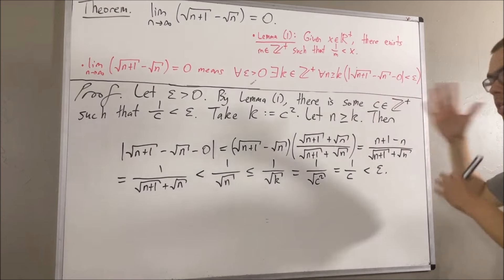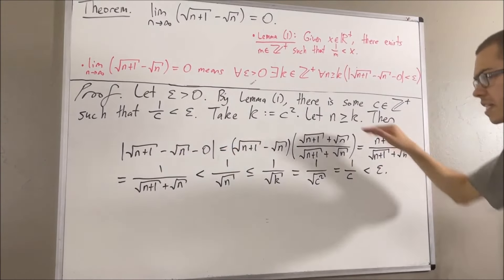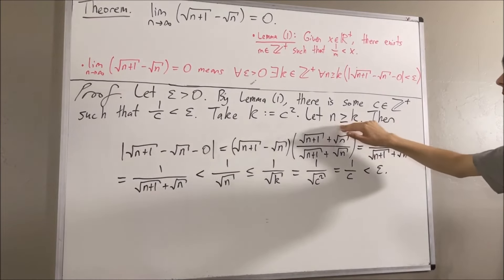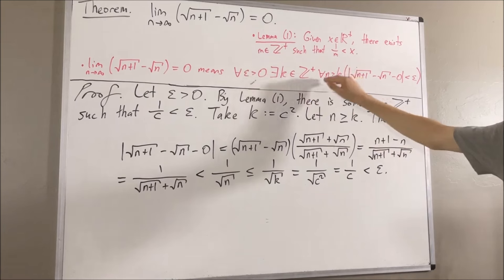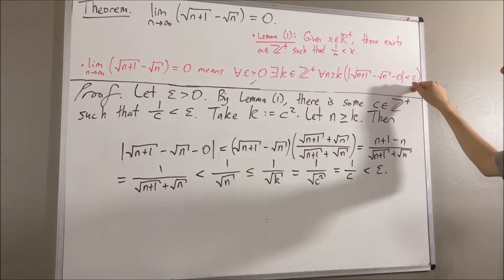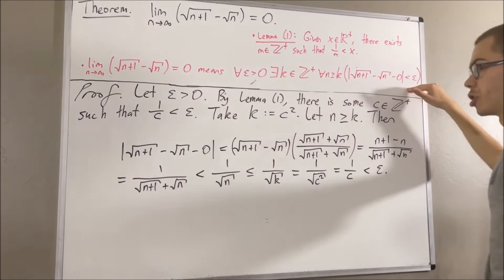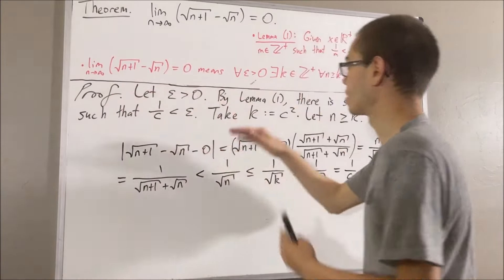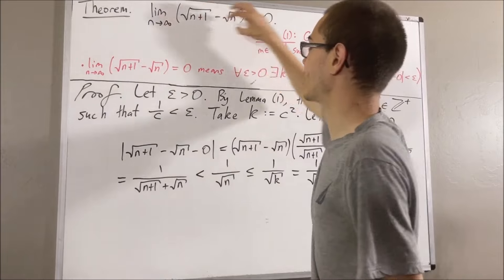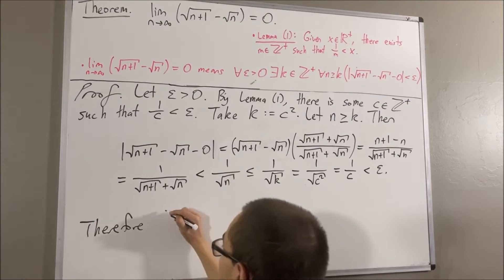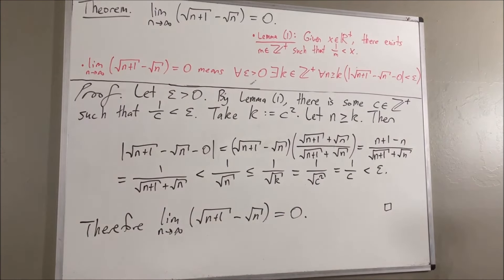Now let's put this together. We see that under the assumption n is greater than or equal to k, it follows that this expression is less than epsilon. Since n was arbitrary, this means that for all positive integers n greater than or equal to k, this is less than epsilon. So we have found a positive integer k which makes this statement turn out true. Putting this all together, under the assumption epsilon is greater than zero, this is true. Since epsilon was arbitrary, for all epsilon greater than zero this is true. So we have proven this entire statement, which means we have shown that the limit equals zero. This completes the proof — that's pretty much it for this video.